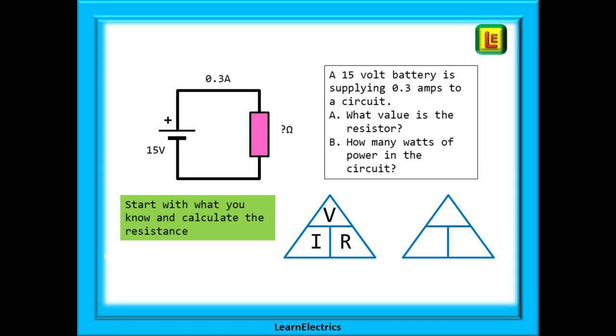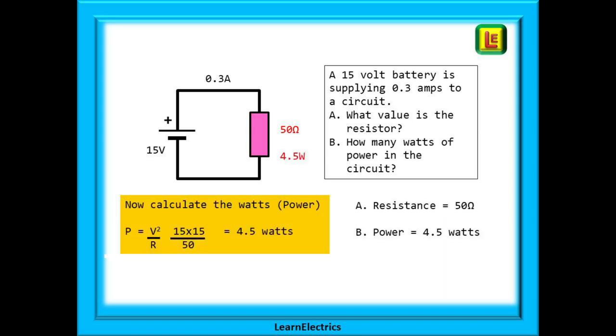Do the Ohm's law part first and calculate the value of the resistor. You already know the voltage and the current. It is now an easy task to calculate the resistance. 15 volts divided by 0.3 amps is 50 ohms of resistance. Now that we have the resistance we can work out the wattage. Use the formula V squared divided by R. So 15 times 15 divided by 50 is 4.5 watts.